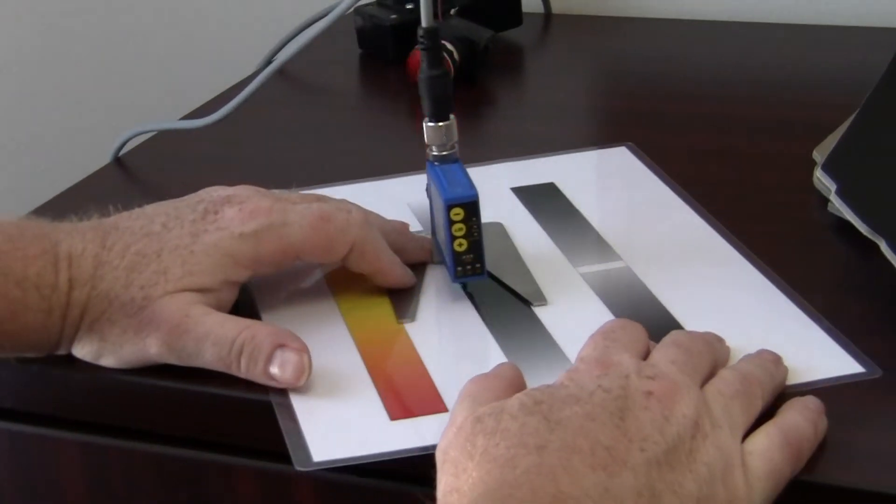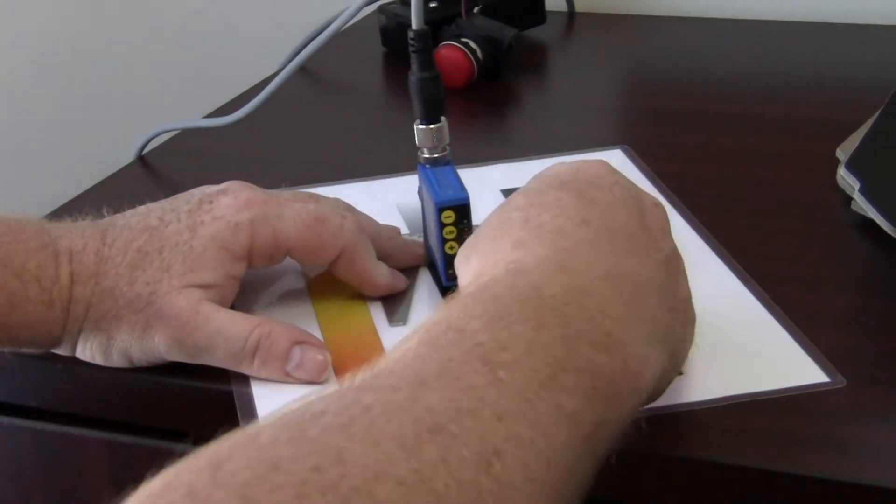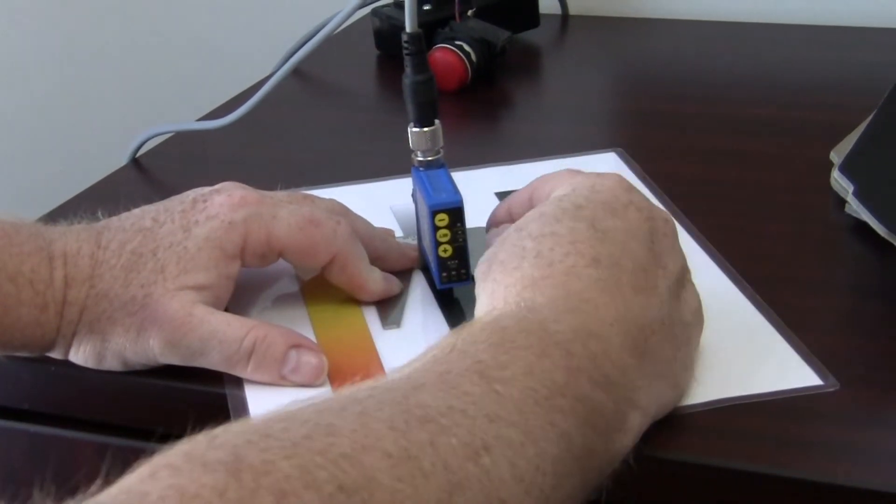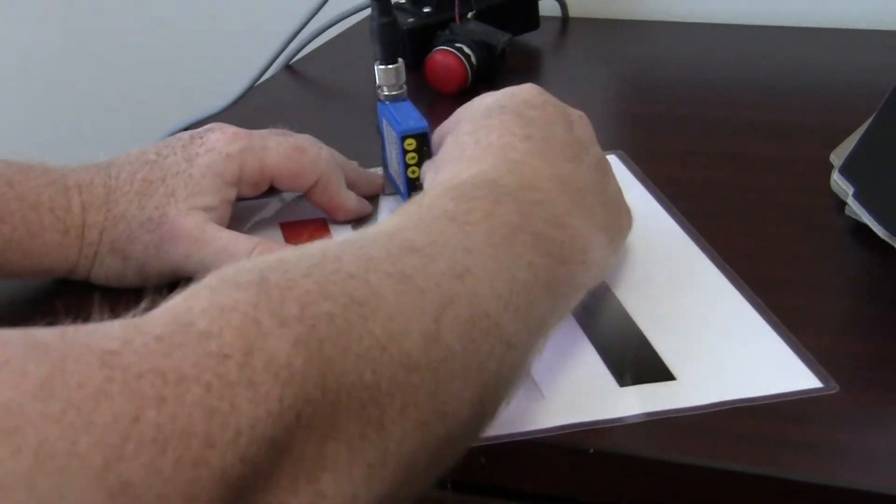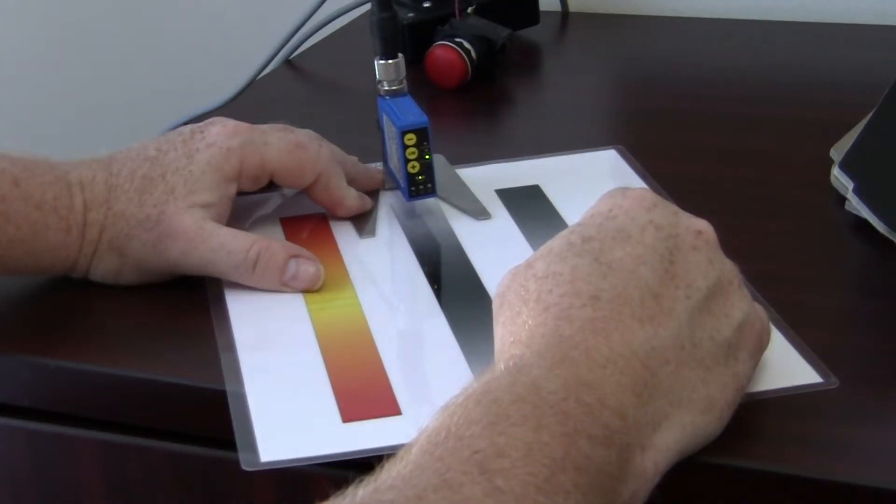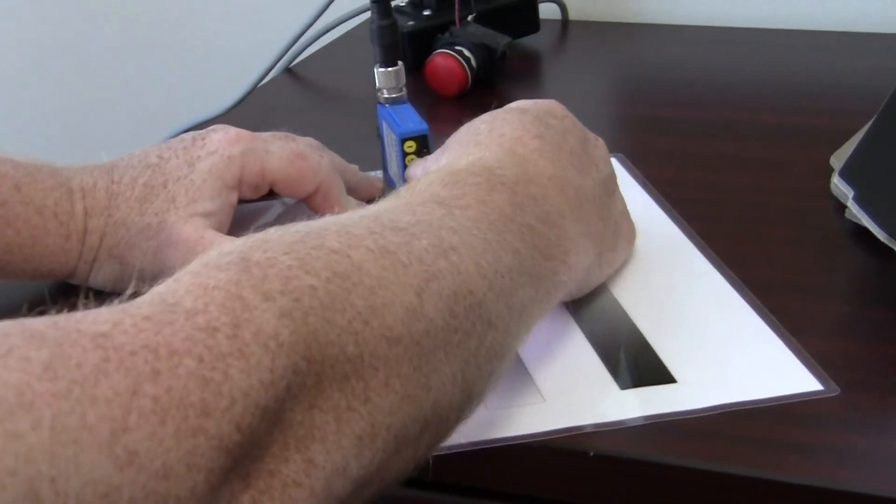If you want to set it for black, you press set, set, and I'll just go midrange, set.